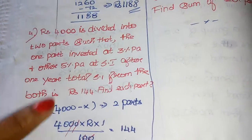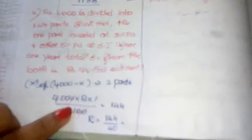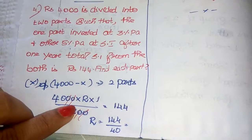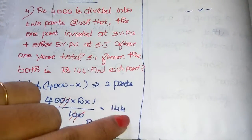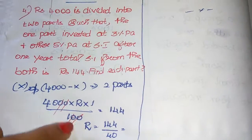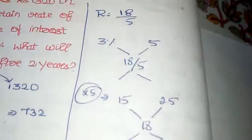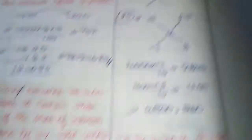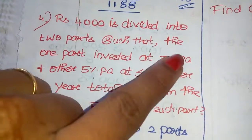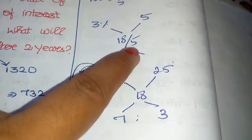Using the short process (allegation method): total = 4,000 × R / 100 = 144, so R = 144/40 = 18/5. The two rates are 3% and 5%. New mean rate of interest is 18/5. Applying allegation: 5 and 3 against 18/5.